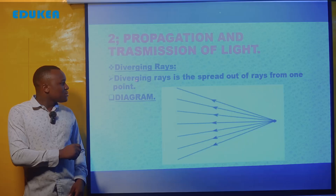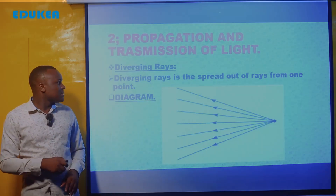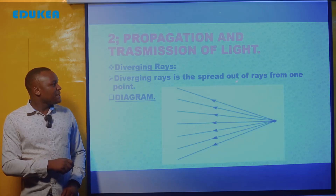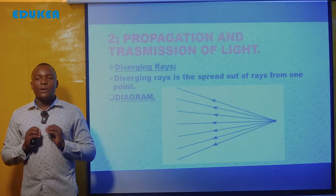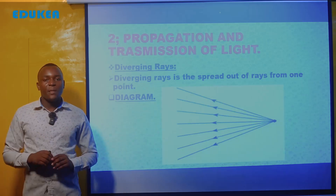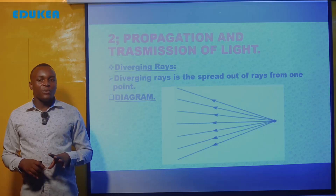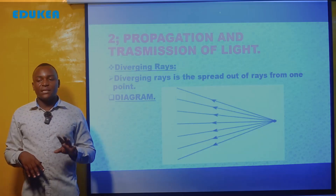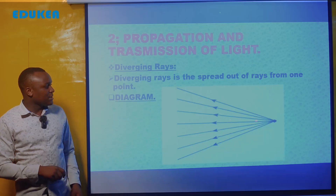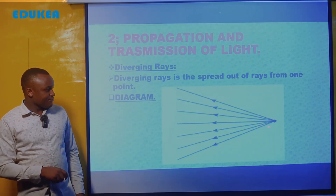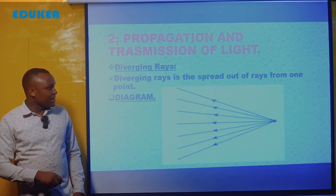When we talk about diverging rays, we say it is the spread out of the rays from one point. Kwa mbao tunasema unachukua saule ya mwanga unautawanya katika point mbali mbali — that is diverging. The rays diverge from one point into different parts, as shown in the diagram. There is one point and the light is still diverging in different directions.